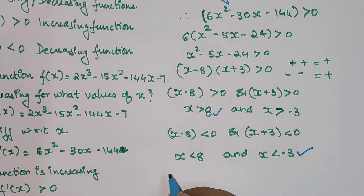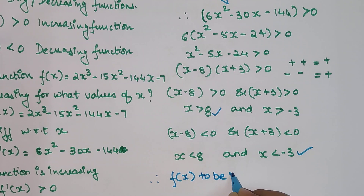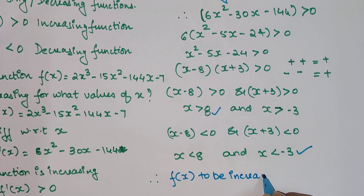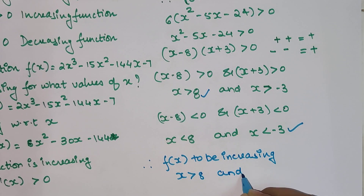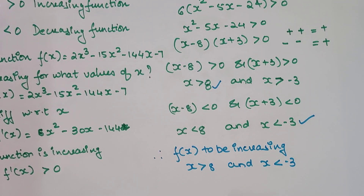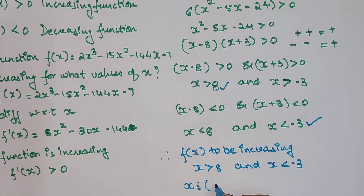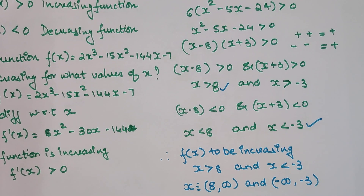Therefore, for f(x) to be increasing, x > 8 and x < -3. So the values or intervals for which f(x) is increasing are (8, ∞) and (-∞, -3).